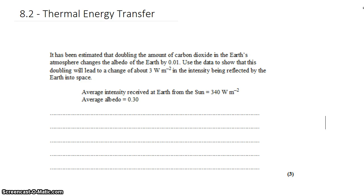All right, David Kahn here with another question from the Question Bank in topic 8. We're looking at albedo. It's been estimated that doubling the amount of carbon dioxide in the Earth's atmosphere will change the albedo by 0.01. Use the data to show that this doubling will lead to a change of about 3 watts per square meter in the intensity being reflected by the Earth into space. We're given the average intensity of energy received at the Earth from the Sun and the average albedo of the Earth.